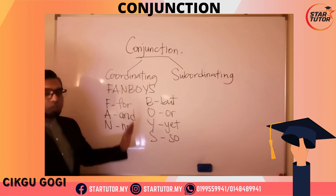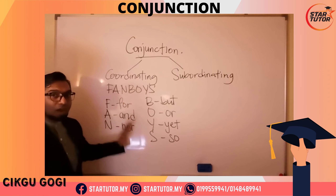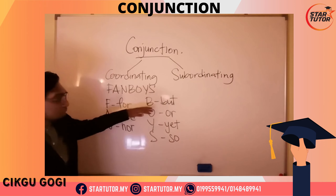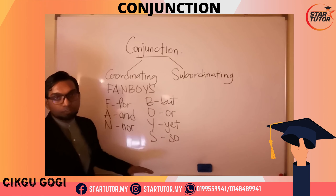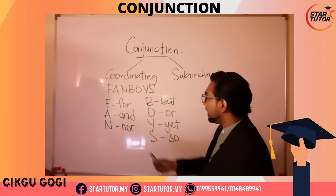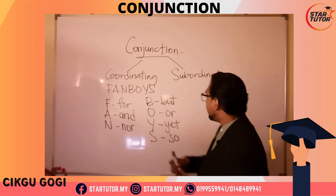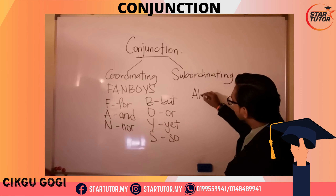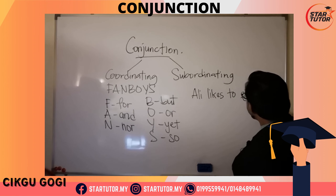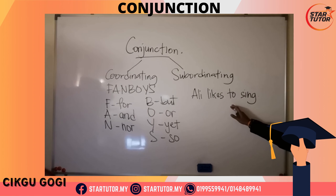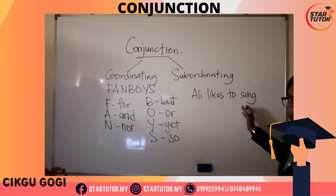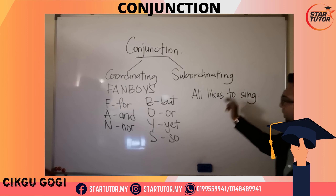When you want to combine two independent clauses, you can only use these seven conjunctions. Let's take a look at an example using 'and.' Here is a complete sentence: 'Ali likes to sing.' It can stand by itself — it's a complete sentence.